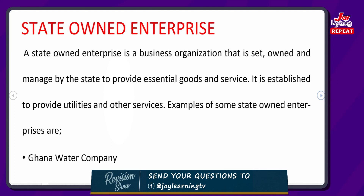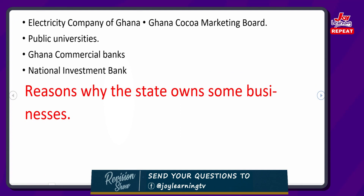Now let's look at what a state-owned enterprise is. A state-owned enterprise is a business organization that is set up, owned and managed by the state to produce or provide essential goods and services. Examples include Ghana Water Company, Electricity Company of Ghana, Ghana Cocoa Marketing Board, Ghana Commercial Bank Limited, and the National Investment Bank.